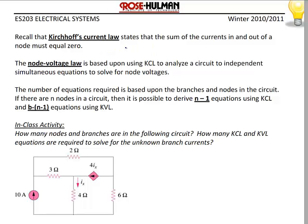Recall that Kirchhoff's current law states that the sum of the currents into and out of a node must equal zero. The node voltage method is based upon KCL and is used to analyze a circuit using independent simultaneous equations to find node voltages. If there are n nodes in a circuit, it is possible to derive n minus 1 equations using KCL, and b minus (n minus 1) equations using KVL, where n is for nodes and b is for branches. This can also be written in terms of essential nodes and essential branches.